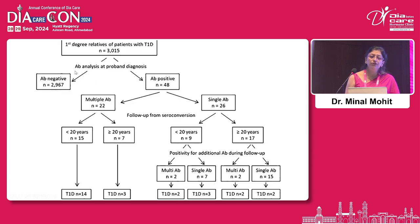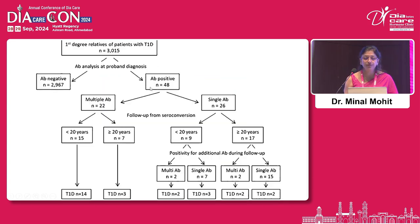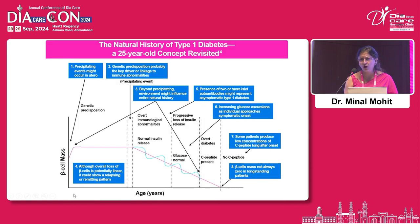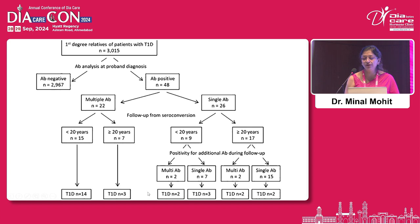Now look at the heterogeneity. If there is a first degree relative and you do a proband diagnostic study — antibody negative, rule out. Antibody positive with multiple antibodies and the child is less than 20 years, the child will develop diabetes in almost 90% of cases. Above 20 years, less chances. If single antibody, there are chances of increasing seroconversion, and with increasing seroconversion there is an increased chance of developing type 1 diabetes.